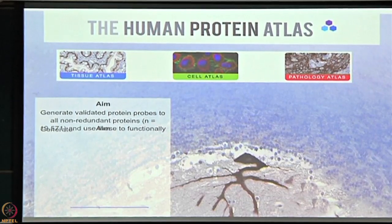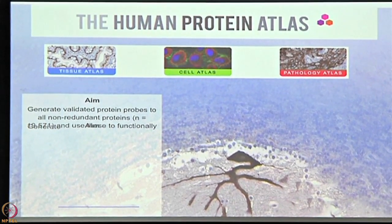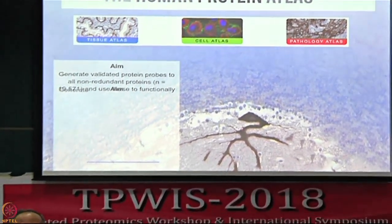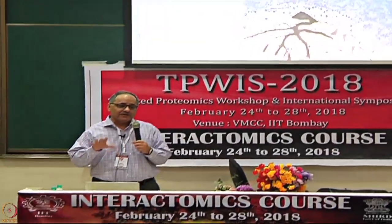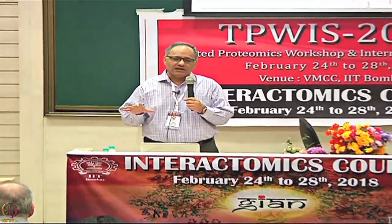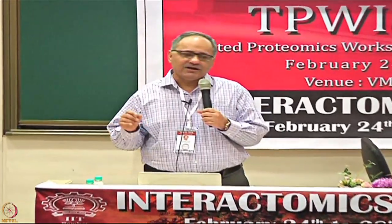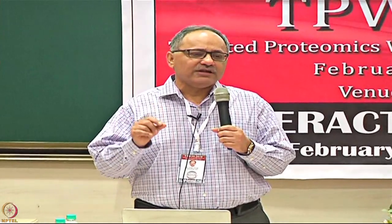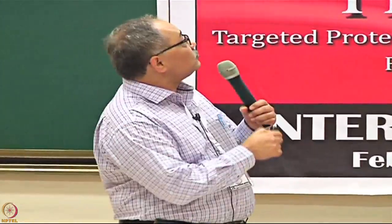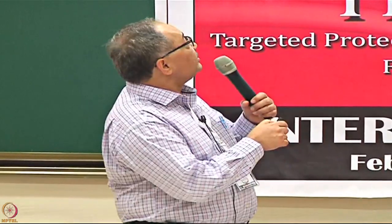To give you a brief history about the protein atlas, it started in 2003. The idea was to generate antibodies and study their presence in normal and cancer tissues, and to produce one antibody for every non-redundant gene. The protein atlas is composed of three main parts: the tissue atlas, which covers normal tissues; the cell atlas, which is now the center of many ongoing developments; and the pathology atlas, which consists of the use of antibodies on pathology tissue.